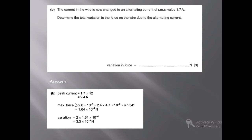First of all, we need to convert the RMS value into peak current. We know that I_rms = I₀ / √2. To find the peak current, we multiply I_rms by √2, so we multiply 1.7 by √2, and the value of peak current we get is 2.4 ampere.